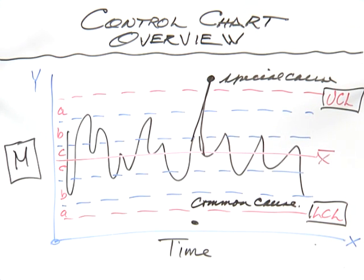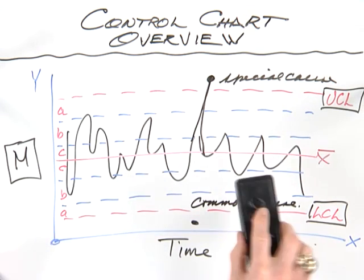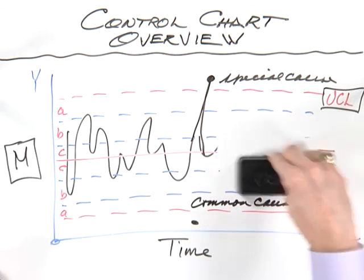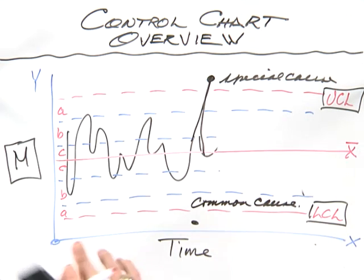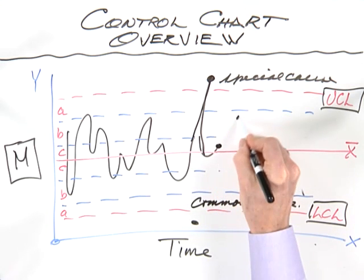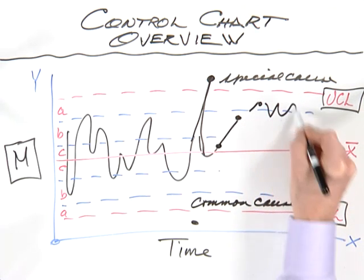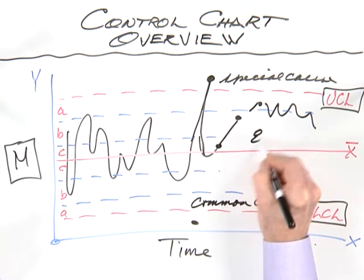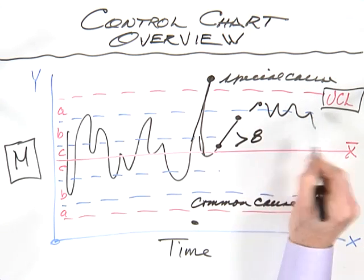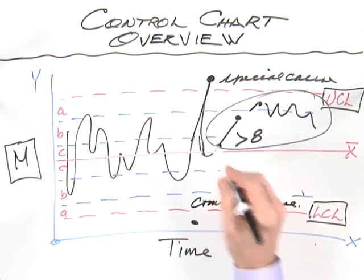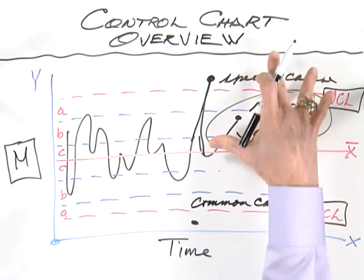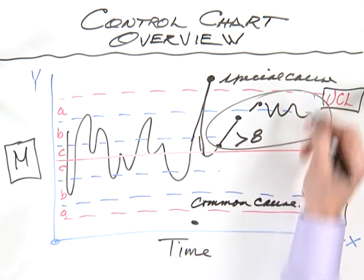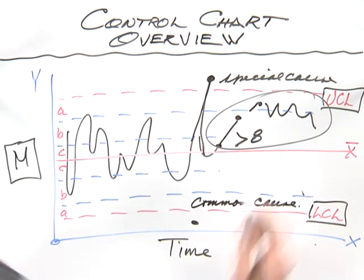A shift in the data occurs when you get a certain number of data points that hang above or below the center line. If we have our mean and we had our data that hung above the center line for eight or more data points in a row, that would signal a shift. The data were randomly arraying themselves and then all of a sudden for some reason they stayed at a particularly high level or low level. Eight data points or more constitute a shift in the process.